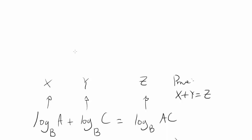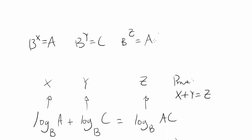So let's try to do just that. We know B to the X is equal to A, B to the Y is equal to C, and B to the Z is equal to A times C. We know what A and C are — A is B to the X, and C is B to the Y. So A times C is equal to B to the X plus Y.